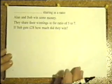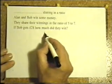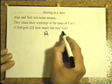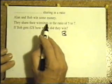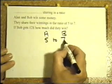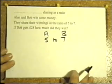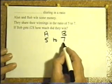Sharing the money between Alan and Bob. Alan and Bob win some money. They decide they share their winnings in the ratio of 5 to 7. Same ratio. But this time Bob gets £28. Bob gets £28.